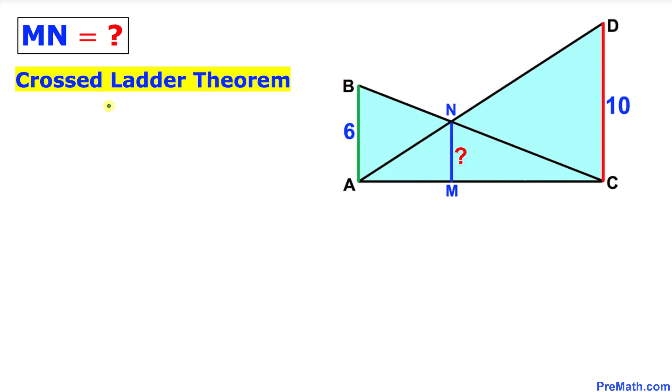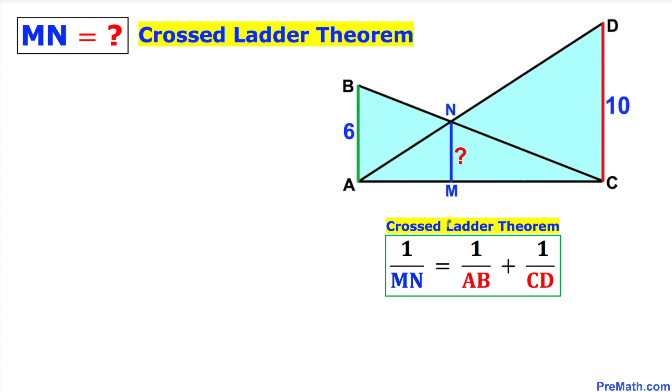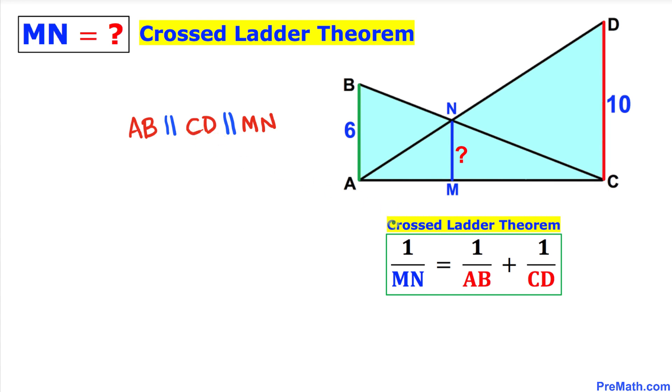We are going to use this Crossed Ladder Theorem to solve this given problem. Here is our Crossed Ladder Theorem, and according to this theorem, one over this length MN equals to one over this length AB plus one over the length CD. Pretty simple formula.